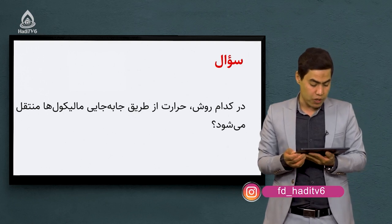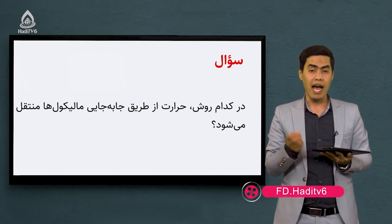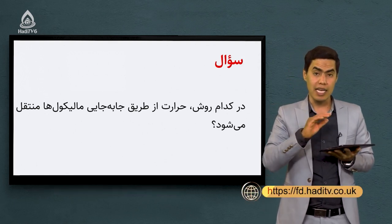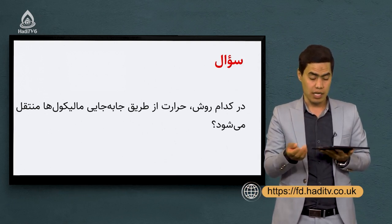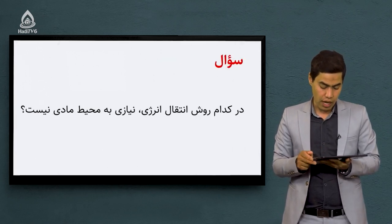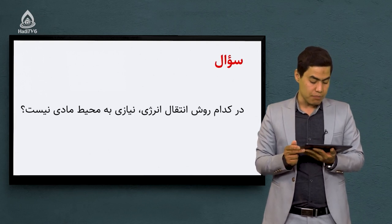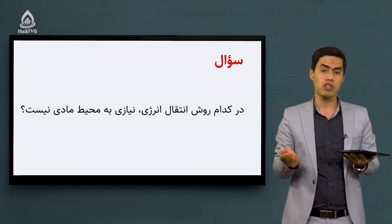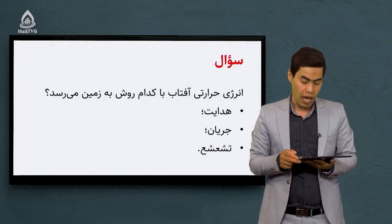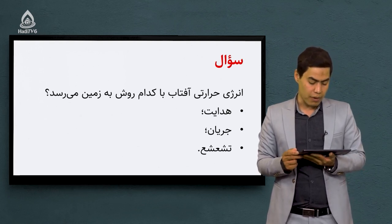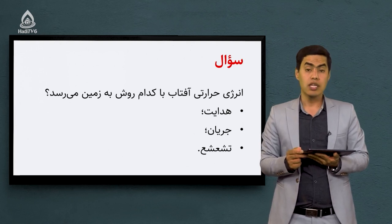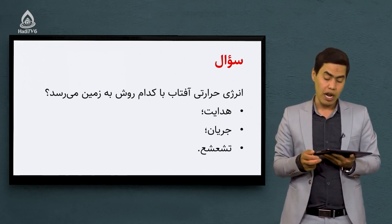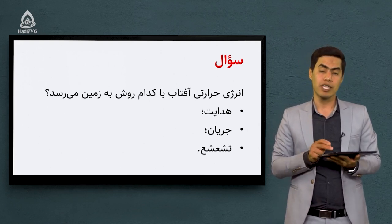در کدام روش حرارت از طریق جابه‌جایی مولکول‌ها منتقل می‌شه؟ فقط در روش جریان است که مولکول‌ها خودشان منتقل می‌شن و جابه‌جا می‌شن. در روش هدایت سر جای خودشان هستند و فقط انرژی را از طریق حرکت ارتعازی منتقل می‌کنند. در کدام روش انتقال انرژی نیازی به محیط مادی نداریم؟ روش تشعشو. انرژی حرارتی آفتاب با روش تشعشو به زمین می‌رسه که نیازی به محیط مادی هم نداریم، اما در روش هدایت و جریان نیاز به محیط مادی داریم.